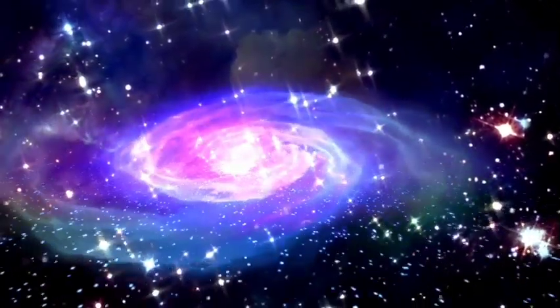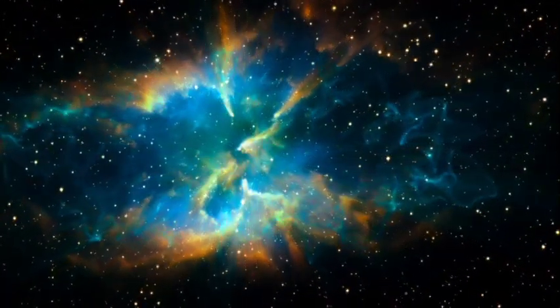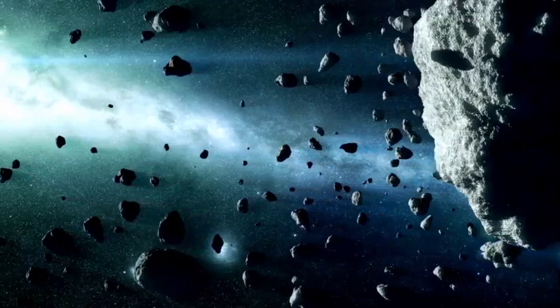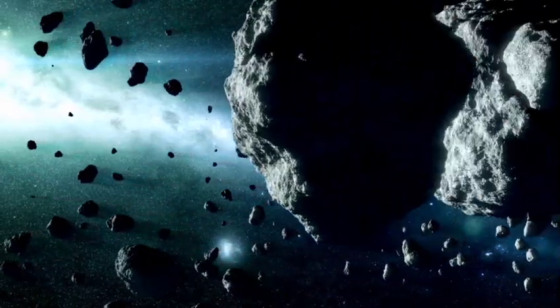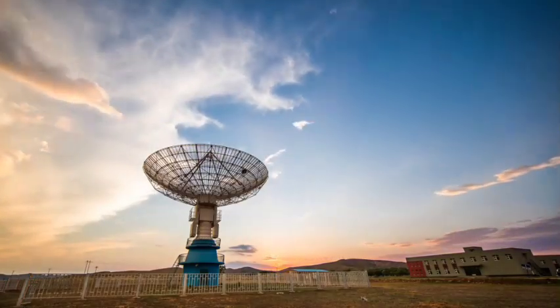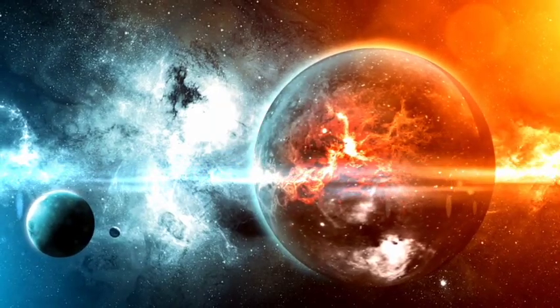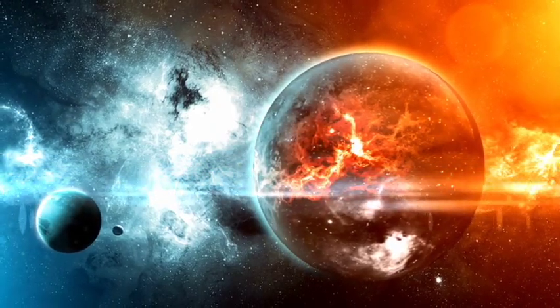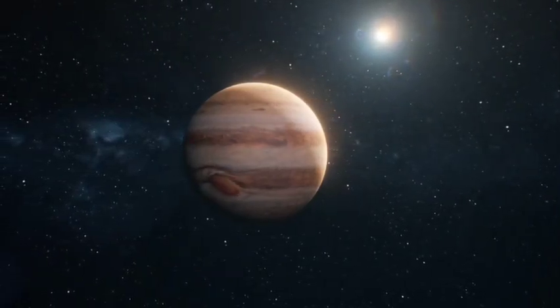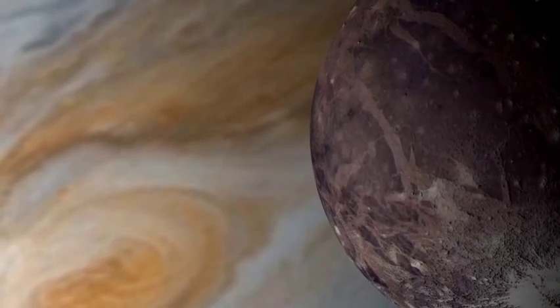Betelgeuse is a dying star heading toward its ultimate fate: a supernova explosion. When it runs out of fuel, it will fuse heavier elements like helium and carbon, causing it to expand even further. Eventually, Betelgeuse will explode in a spectacular supernova, releasing more energy in seconds than the Sun has in its entire lifetime. This explosion will be so powerful that it could briefly outshine the Moon and be visible during the daytime. Some astronomers estimate that Betelgeuse could go supernova within the next 100,000 years, a brief moment in cosmic time yet still unpredictable.